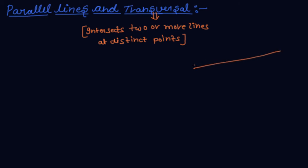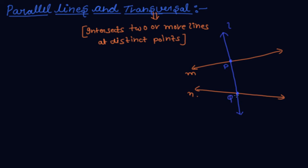So these two lines, this is M and this is N. And one line L will intersect line M at point P and line N at point Q. From angle 1, this is 2, this is 3 and this is 4. This is 5, this is 6, this is 7 and this is 8.